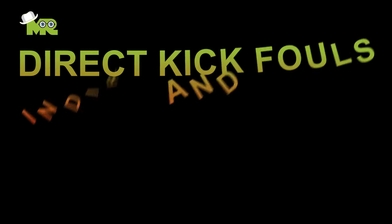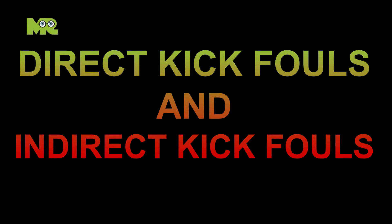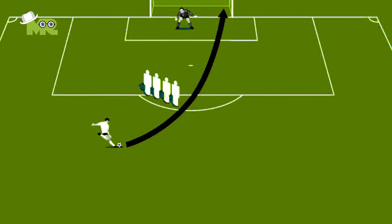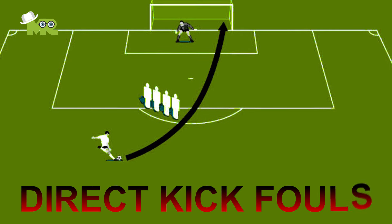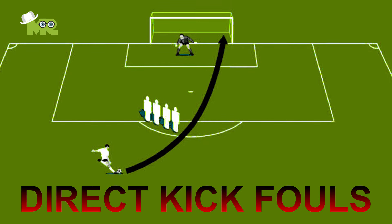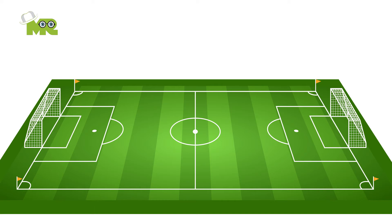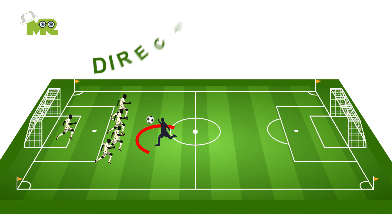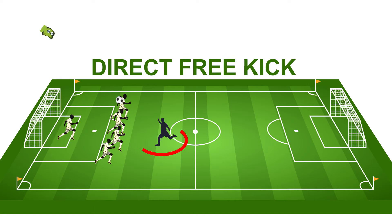There are two types of fouls: direct kick fouls and indirect kick fouls. Let's start with the direct kick fouls. If a foul is given to the player of one team, the opponent's team receives a direct free kick.